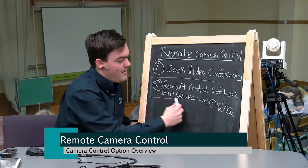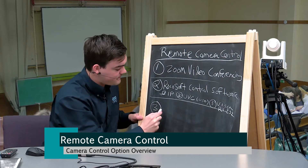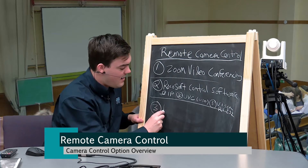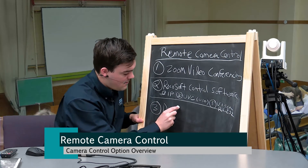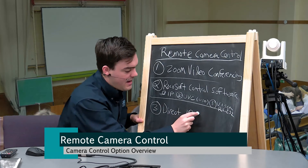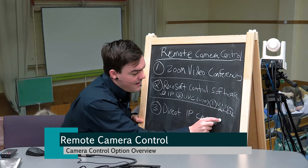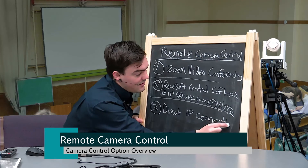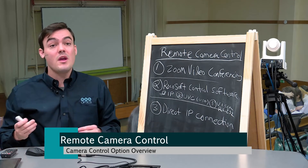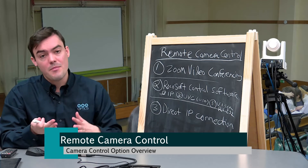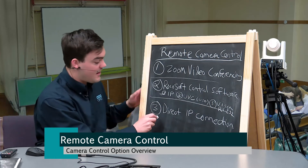Our third option is a direct IP connection. By directly connecting to the camera on the network, you can control pan, tilt, zoom, and call presets. This is the free option, which a lot of people like.